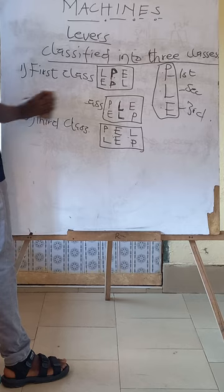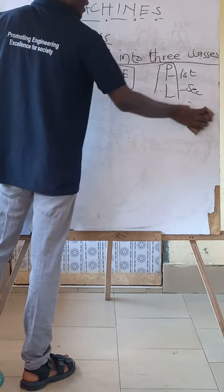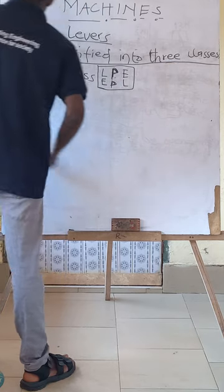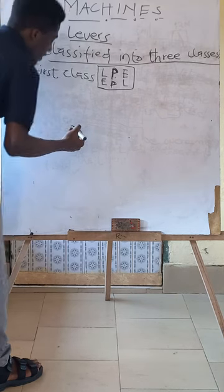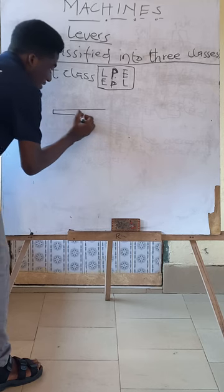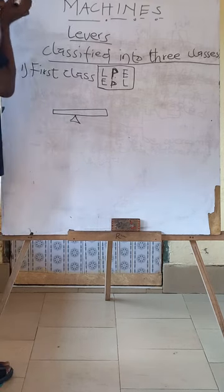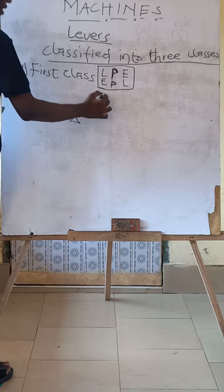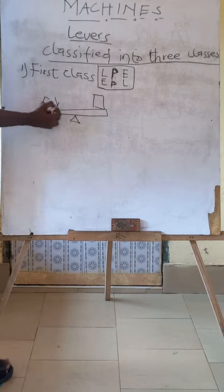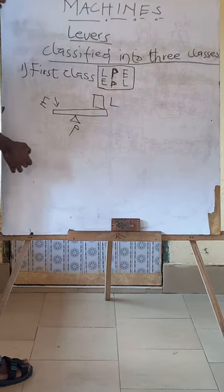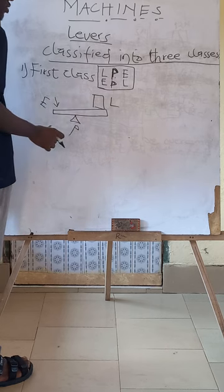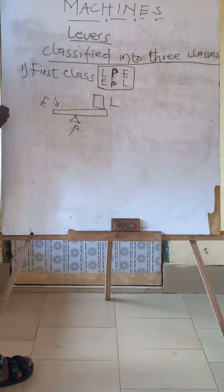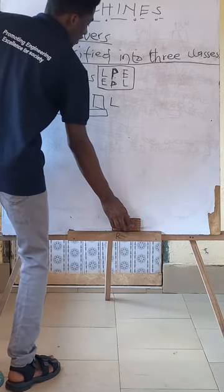Let's look at some examples. As we said, the first class has the pivot at the middle. Under first class levers, we have the seesaw — the diagram I drew earlier was a seesaw. The pivot is here in the middle; a load is on one side and the effort is applied on the other side. The pivot is always at the middle and doesn't move; the load and effort can be interchanged but the pivot stays. This makes it a first class lever. We also have the scissors.